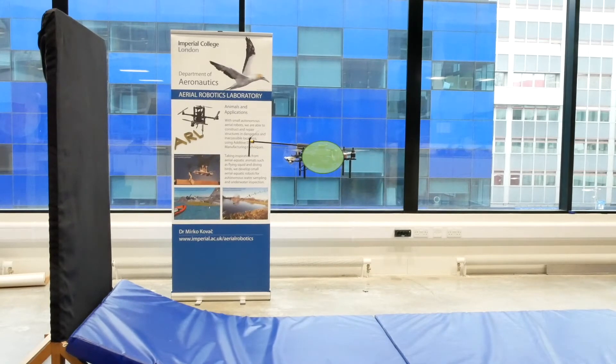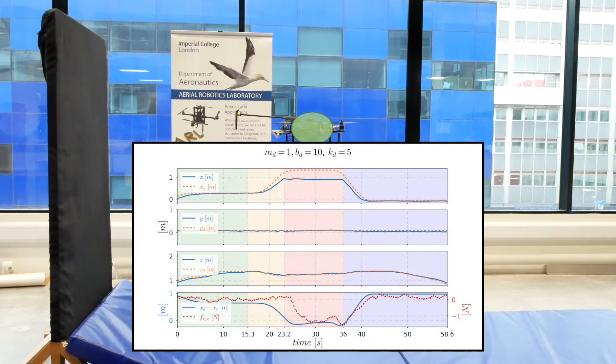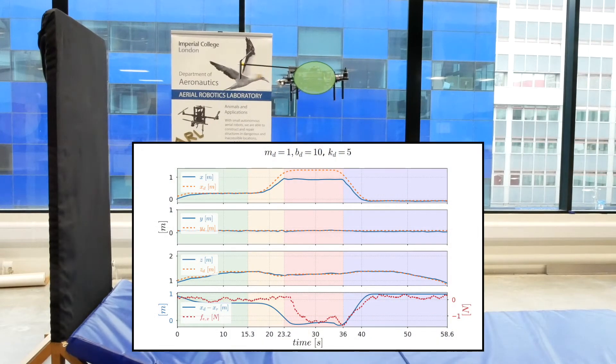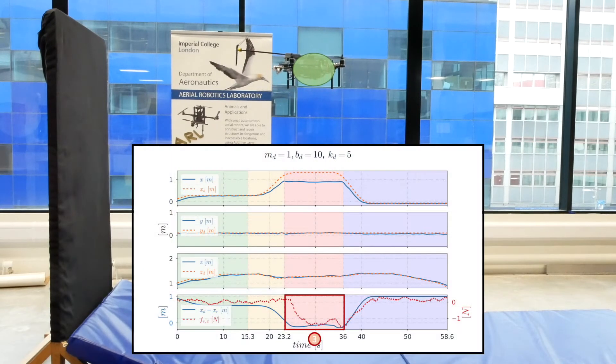The aerial platform will approach and contact the target. The contact phase, highlighted here in red, displays our platform's ability to modify its position based on its sensed contact force. Such behavior can be seen most clearly in the red area of the bottom subplot and allows the platform to interact with its environment in a compliant manner.